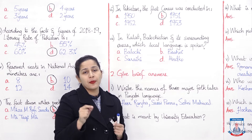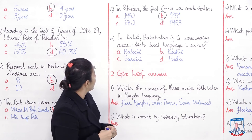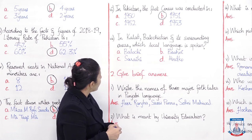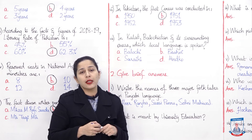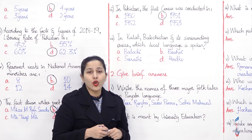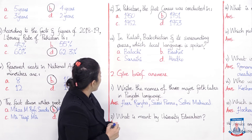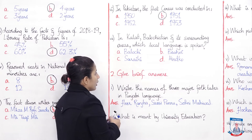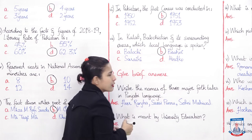Seventh question: In Kalat, Balochistan and surrounding areas, which local language is spoken? In Kalat and surrounding areas of Balochistan, which local language is spoken? There are four options: Balochi, Brahvi, Saraiki, and Hindko. It is Brahvi which is spoken in Kalat region in Balochistan surrounding areas.